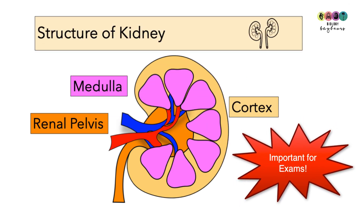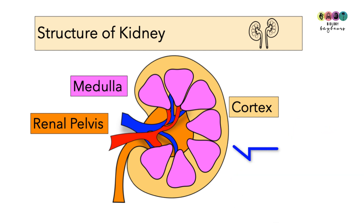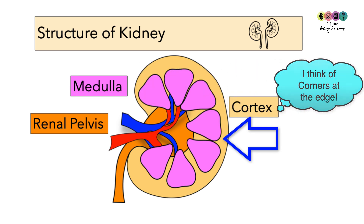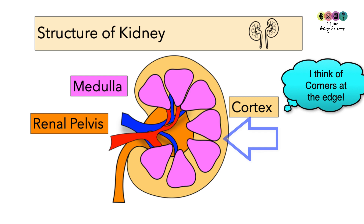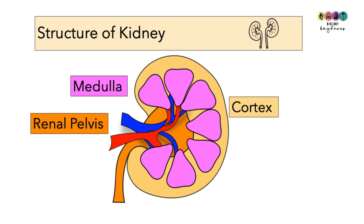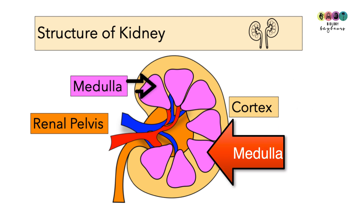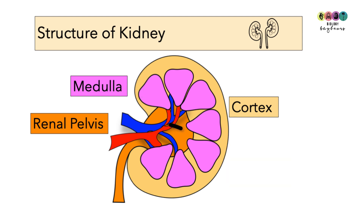You must be able to draw and label a good diagram of the kidney. The first label is the cortex — the outer region. Think of C for cortex, C for corners or edges. The middle section is made up of pyramid-like structures known as the medulla. Then there is the renal pelvis, which acts like a funnel — urine flows into it and down into the ureter.